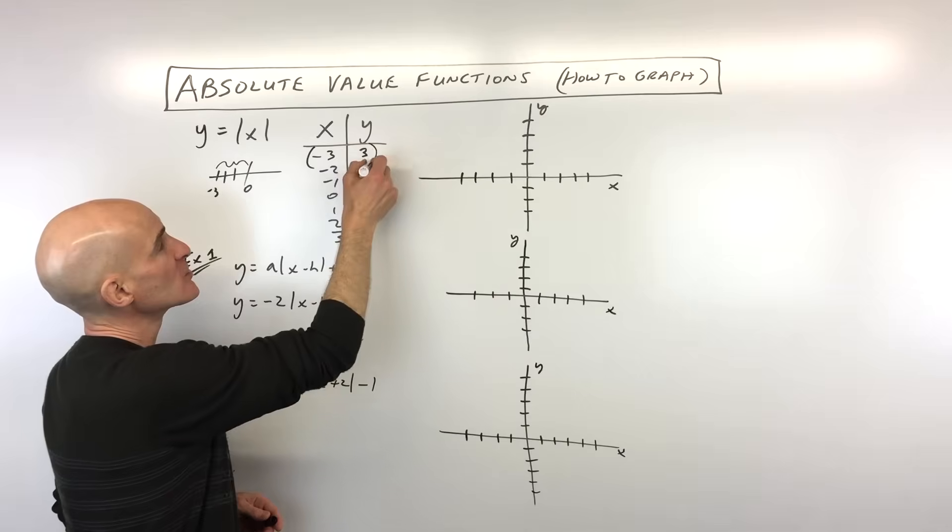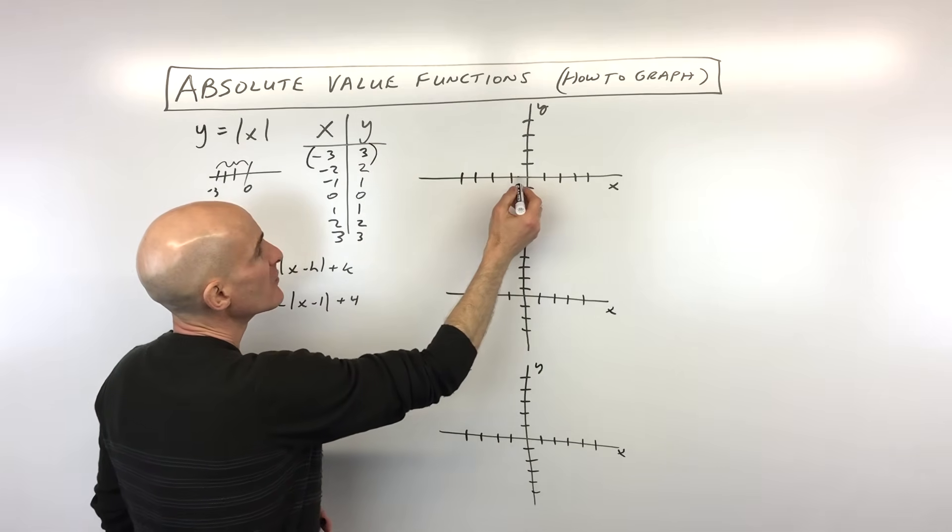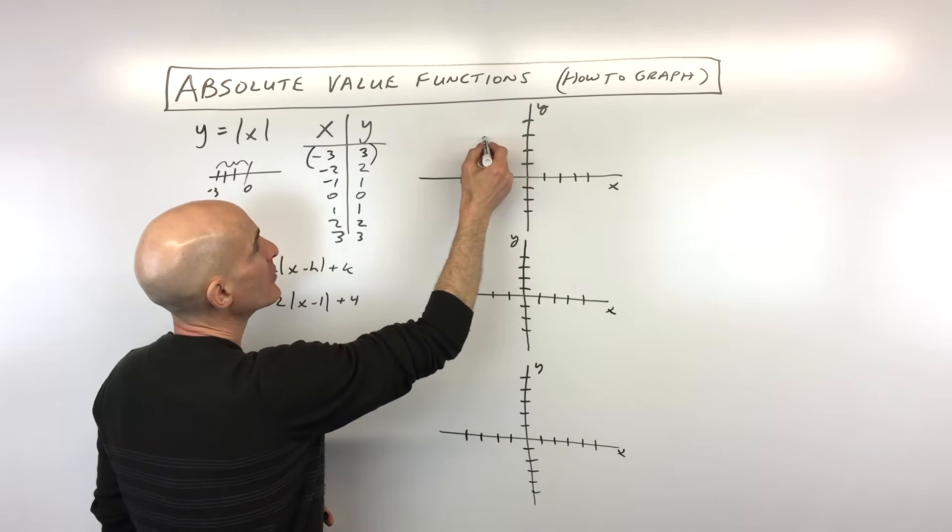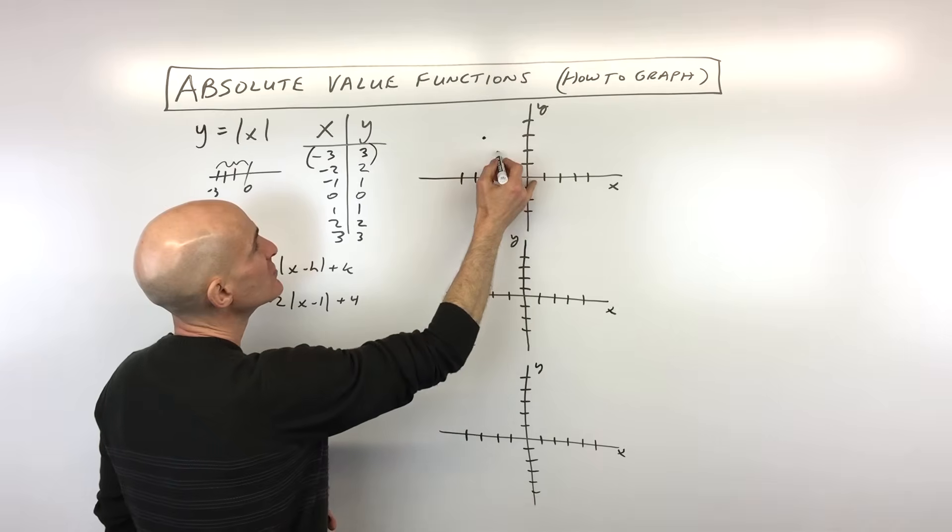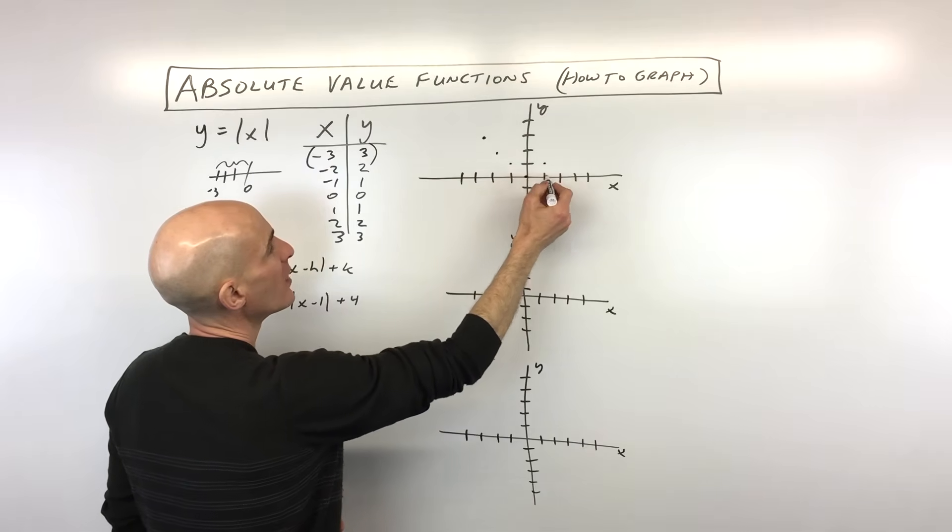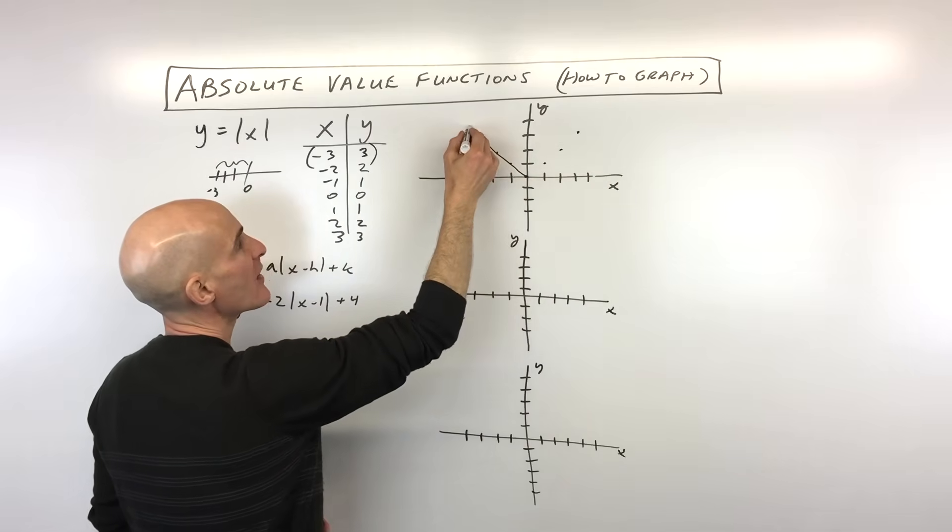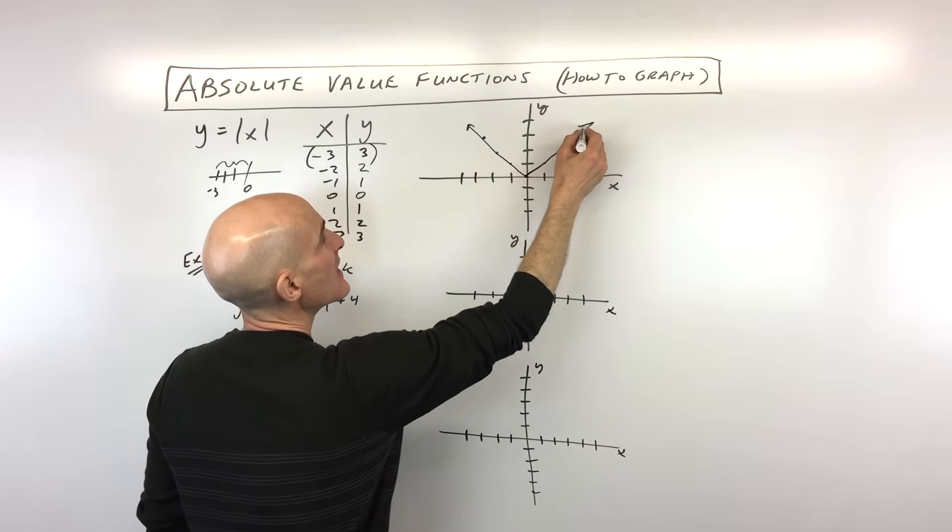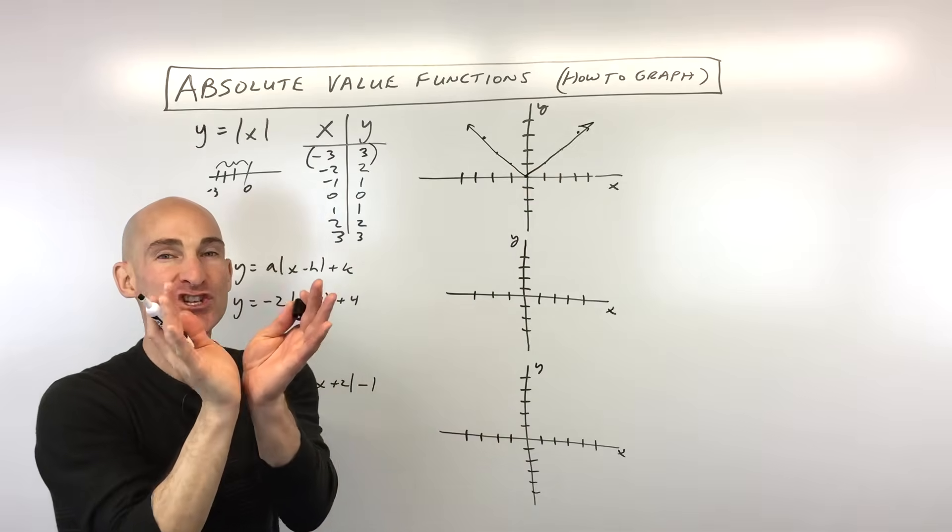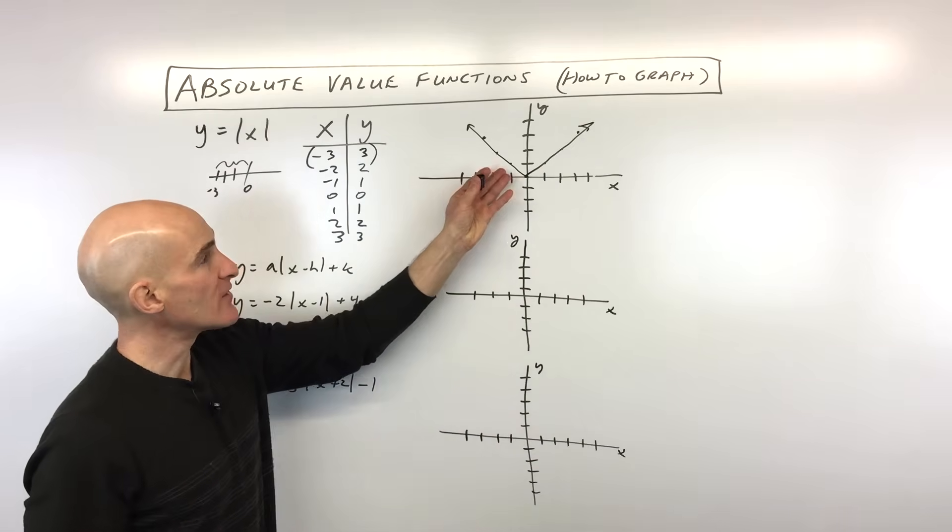All we have to do now is plot these coordinates from the origin. So we've got left 3, up 3. Left 2, up 2. Left 1, up 1. 0, 0, 1, 1. 2, 2. 3, 3. And what you'll notice when you graph these absolute value graphs, it has that real sharp V shape, that real sharp corner to it. So that's our basic graph.